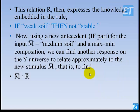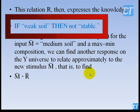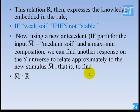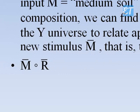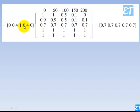With this Rule 1 information, we find the consequent of Rule 2. Rule 1 was: if weak soil then not stable. Rule 2 is: if medium soil, then what? We find that consequent using composition operation — the composition of the new antecedent M (medium soil) and the information R obtained from Rule 1. When we perform max-min operation of M and the relation matrix from Rule 1, we get the answer, which can be linguistically represented as something like 'less stable'.